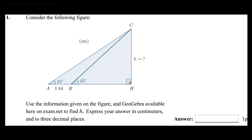Consider the following figure. You have a right-angled triangle. This number is given to you: 1.84 centimeters, and these angles are given. The point is to find H. Use the information given on the figure and GeoGebra available on exam.net to find H. Express your answer in centimeters and to three decimal places.